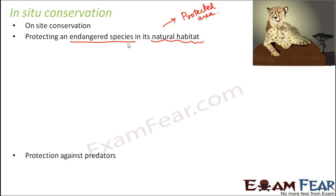These protected areas are established so that endangered species can be protected against predators. Not only are the animals protected from being attacked, but the entire habitat is also protected so that the climate under which the organism lives remains suitable for its survival.